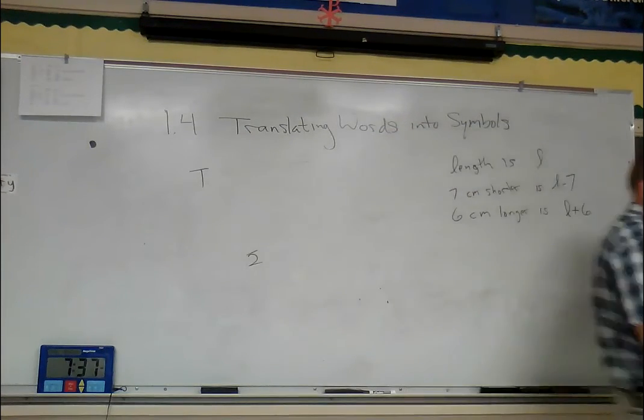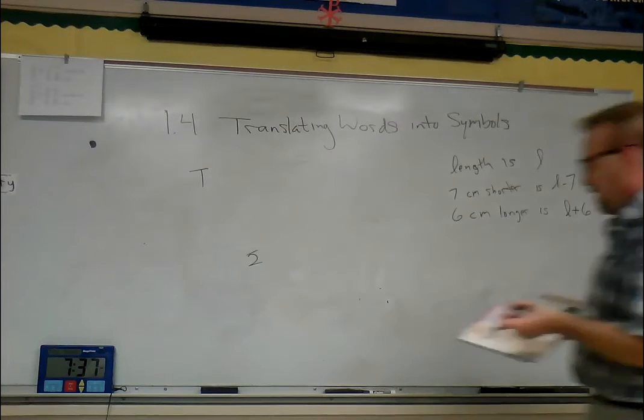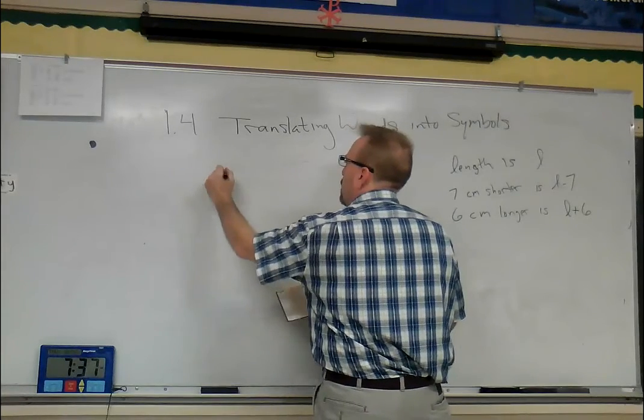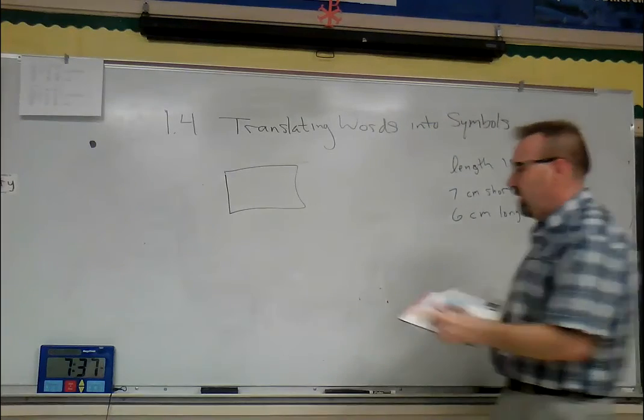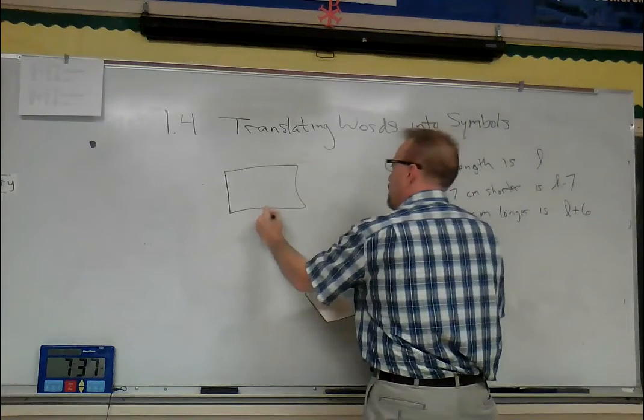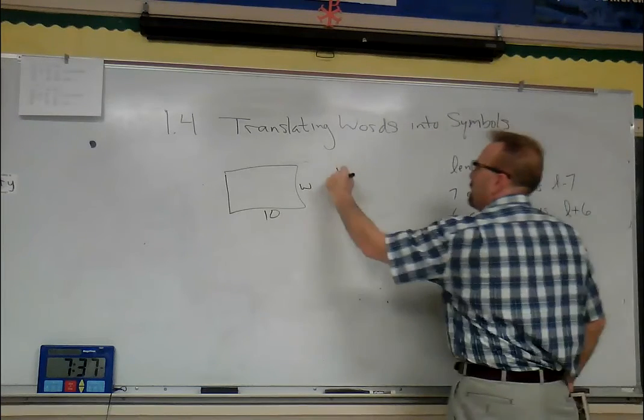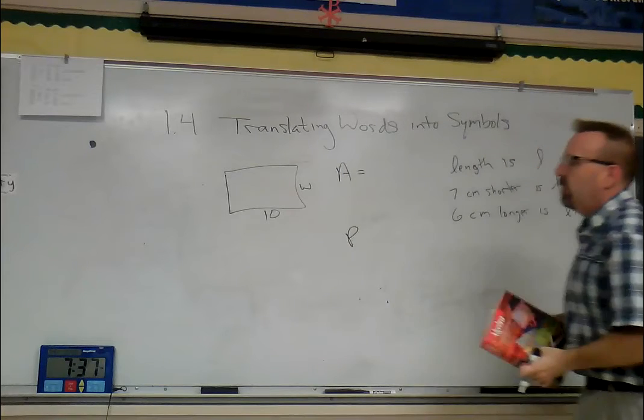What I would recommend for number three - it says find the area and perimeter of a rectangle with length 10 and width w. They didn't do this, but I like to draw pictures. So you have a length of 10, width of w. They want us to find the area and perimeter. Area - what is our length?